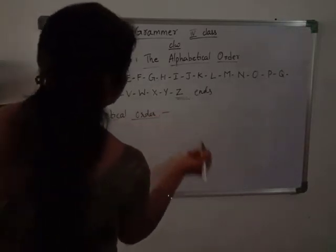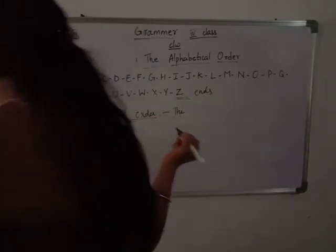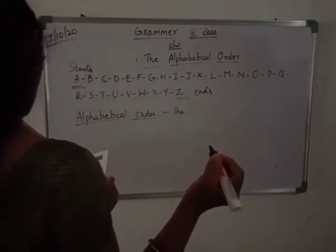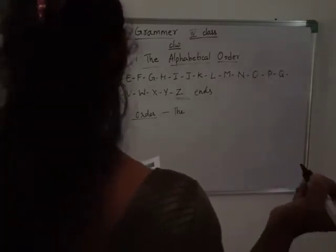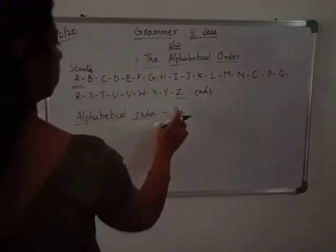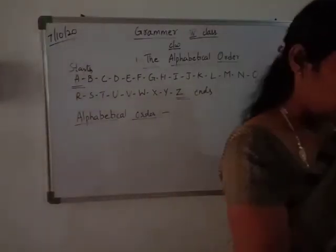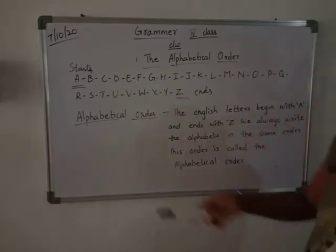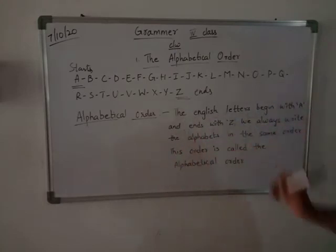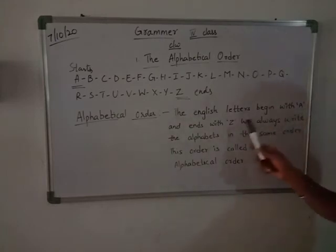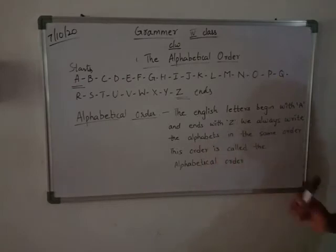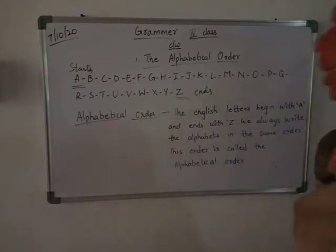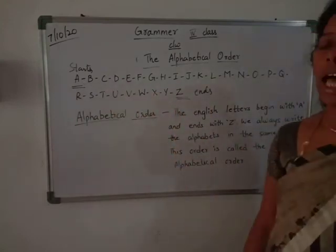So, what do you mean by alphabetical order? The English letters begin with A and end with Z. We always write the alphabets in the same order, and this order is called the alphabetical order.